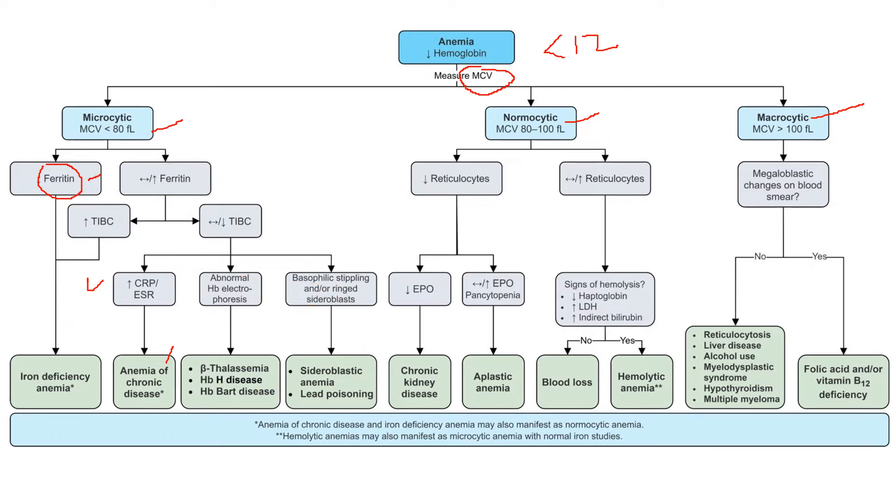I hope that made sense. We went through the microcytic cases. Remember ferritin, remember TIBC—those are going to be your two linchpins of this workup. If you don't diagnose iron deficiency, you're really going to want to start looking for anemia of chronic disease first, and then if that's not there I would look for sideroblastic and I would look for beta thalassemia.